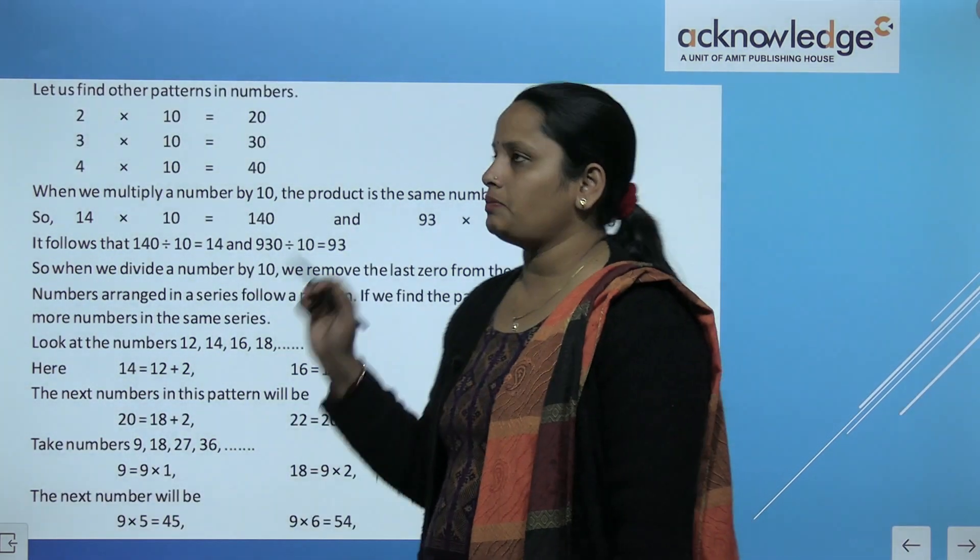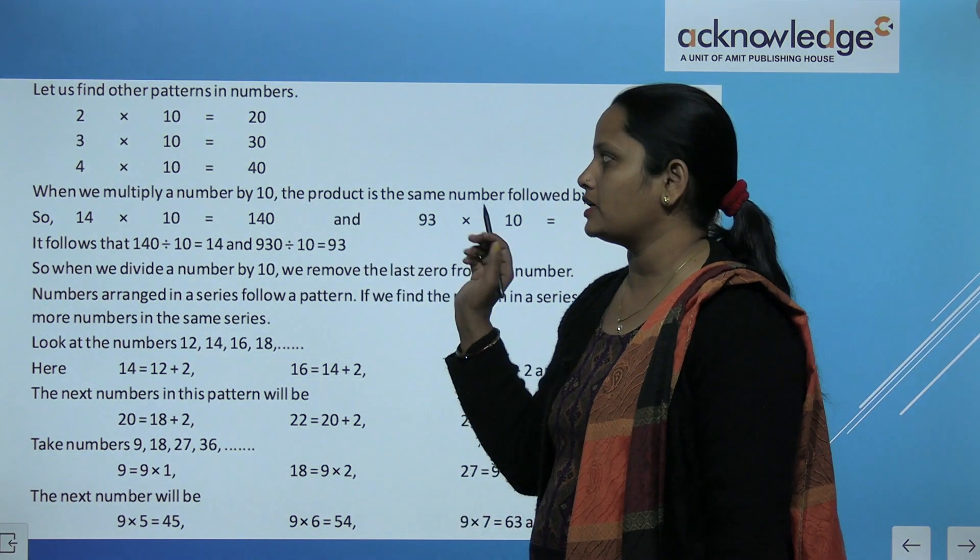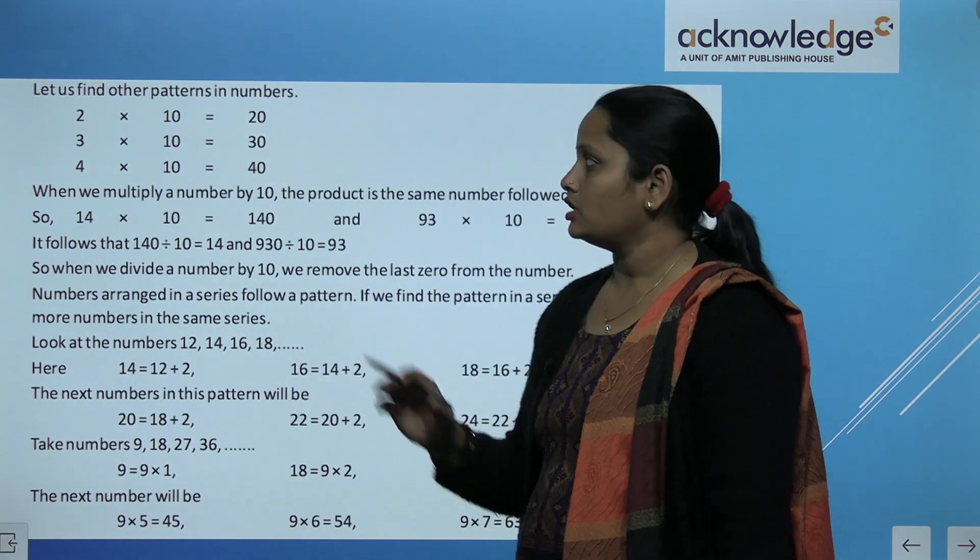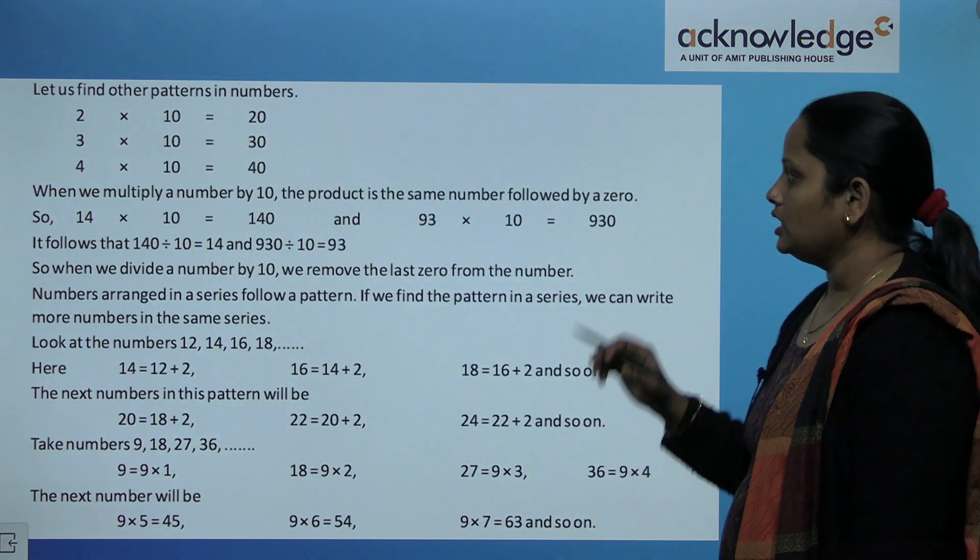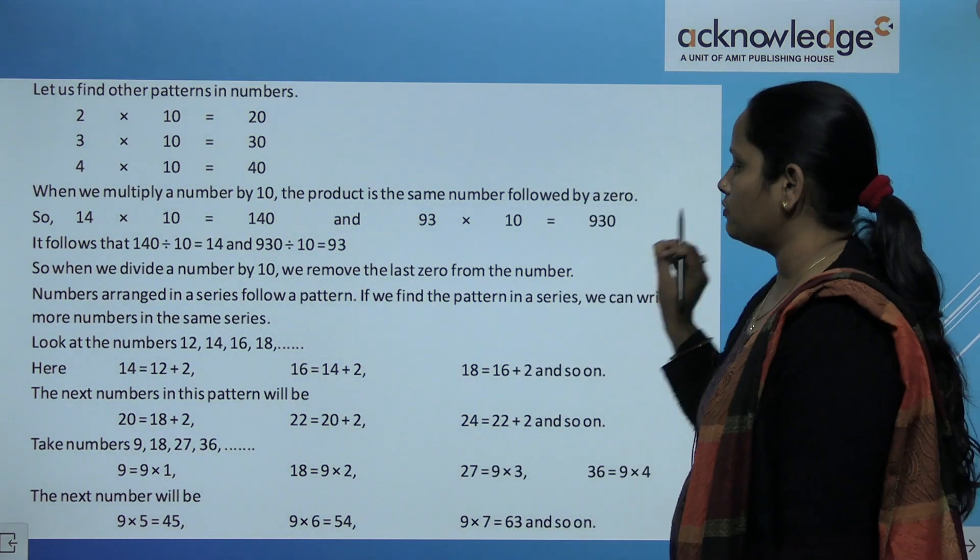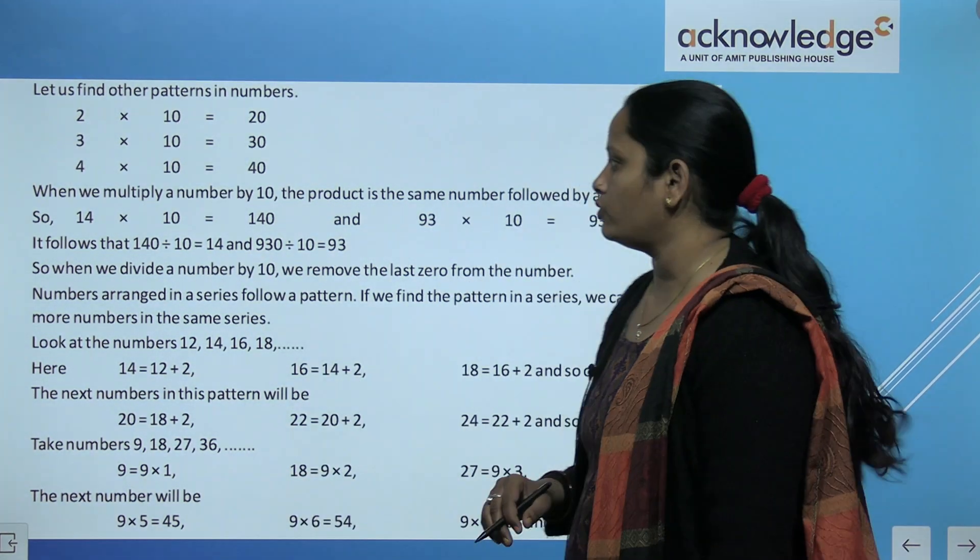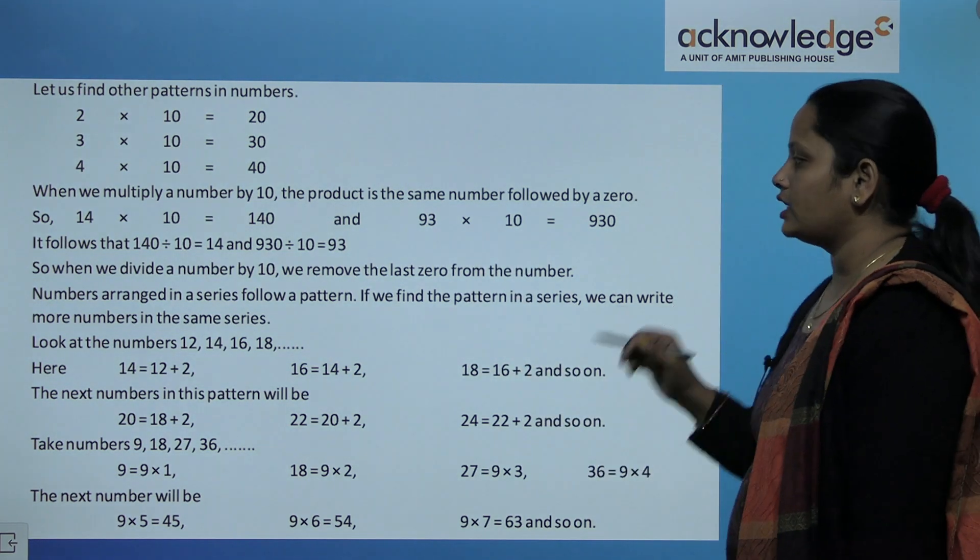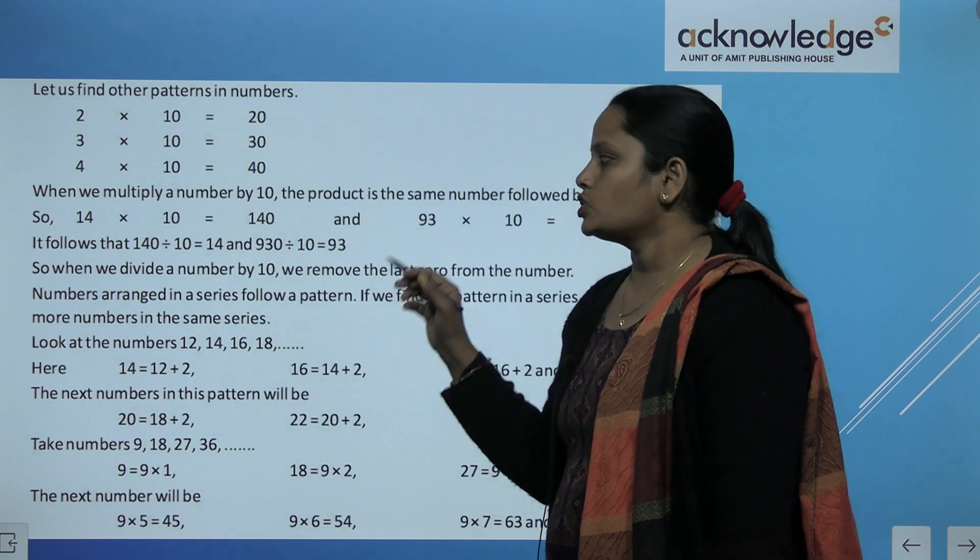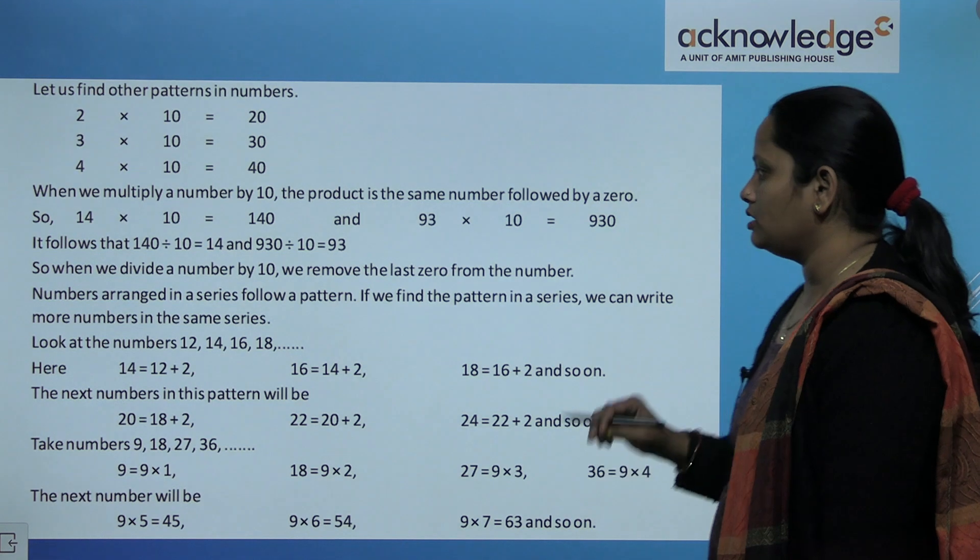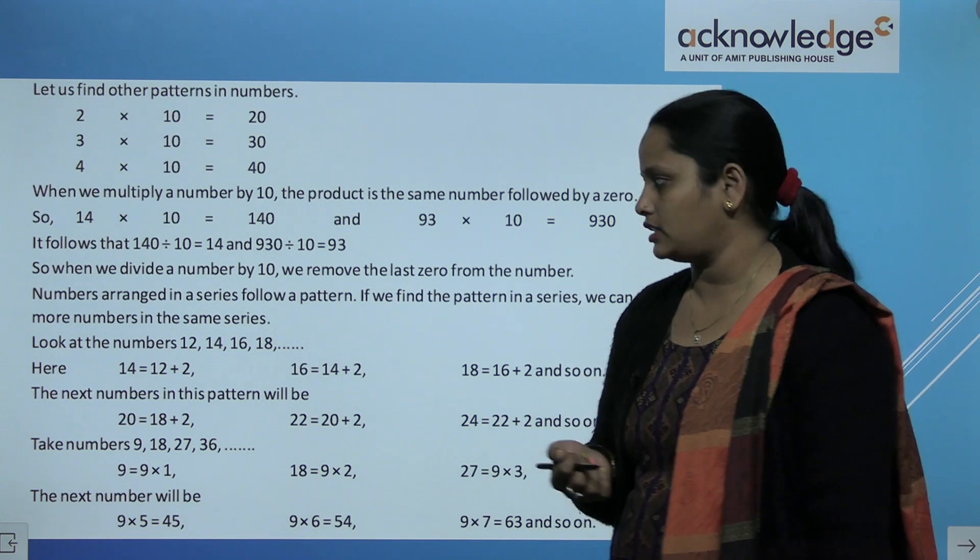Let's find other patterns in numbers. 2 multiply 10 is 20, 3 multiply 10 is 30, and 4 multiply 10 is 40. So this is also a pattern. When we multiply a number by 10, the product is the same number. Uske baad hum we have to just write a 0. So 14 ko humne 10 se multiply kiya, we get 140. 93 ko 10 se multiply kiya, we get 930. Similarly agar hum ne ishi divide kiya, 0 will be removed. So when we divide the number by 10, we remove the last 0 from it.